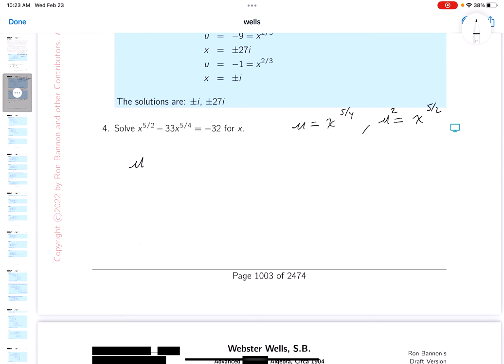u squared minus 33u equals minus 32. Now, the u problem is a lot easier for me to deal with.